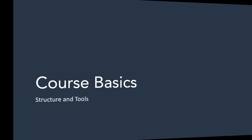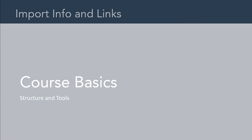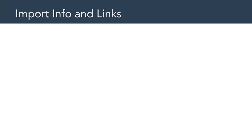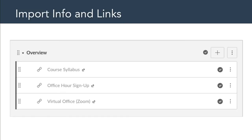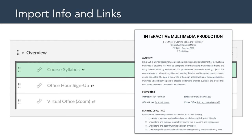That gives you a brief overview of the course itself. Now let's take a look at some of the basics of the class. The first thing I want you to take note of is the overview module in Canvas. There are a couple of important links and documents here. First and foremost, we have a link to the course syllabus, which is a Google Doc that you can view. I encourage everyone in the first week to take a close look at this and to let me know if you have any questions or if anything is unclear.